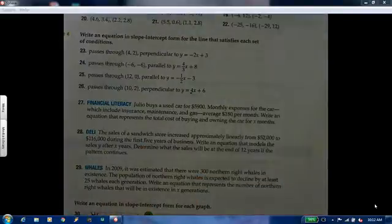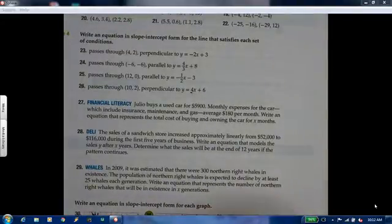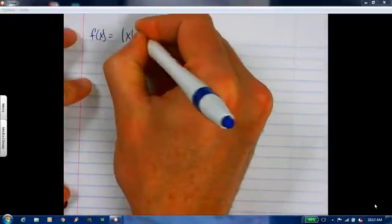So the question was drawing an absolute value graph. Remember the general shape of absolute value? That is the V with the hard point. It's not a parabola, not a curve, it's a hard point. So if we have, let's say, f of x equals absolute value of x plus 2.